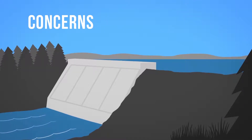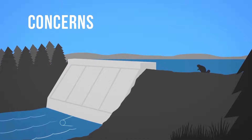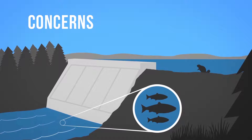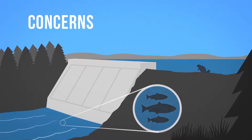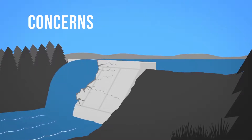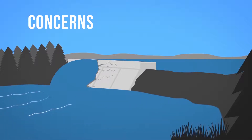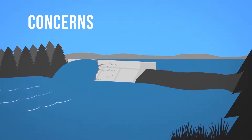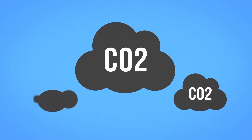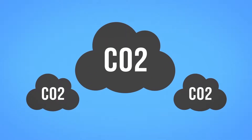There are also some concerns with hydropower, especially when it comes to large dams. Damming a river has a major impact on the local environment, changing wildlife habitats, blocking fish passage, and often forcing people in riverside communities to move out of their homes. In addition, dam failures can be catastrophic, claiming the lives of those living downstream.